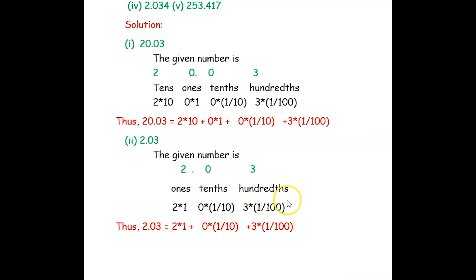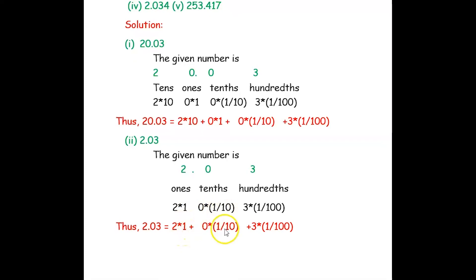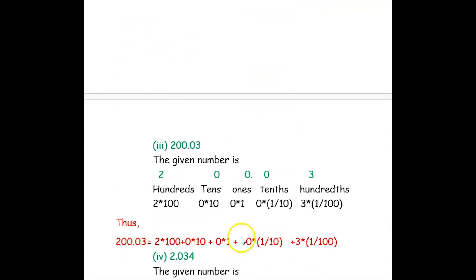In 2.03, we have 2 ones, 0 tenths, and 3 hundredths. So the expanded form is: 2 × 1, plus 0 × (1/10), plus 3 × (1/100). That is 2 × 1 + 0 × (1/10) + 3 × (1/100). This is the expanded form of 2.03.